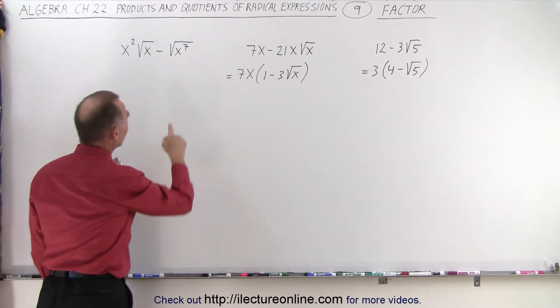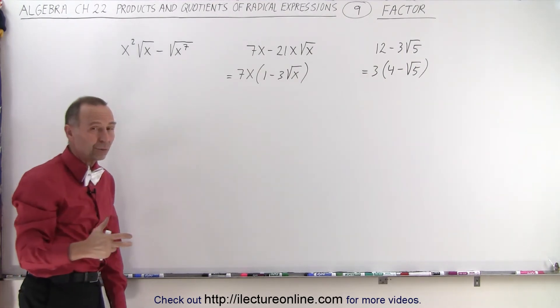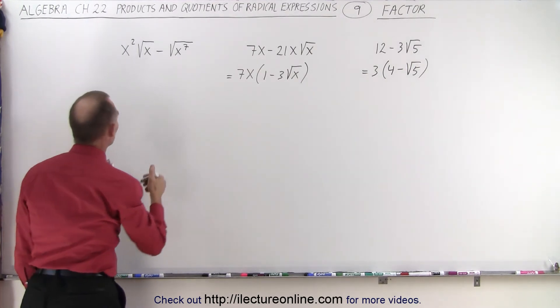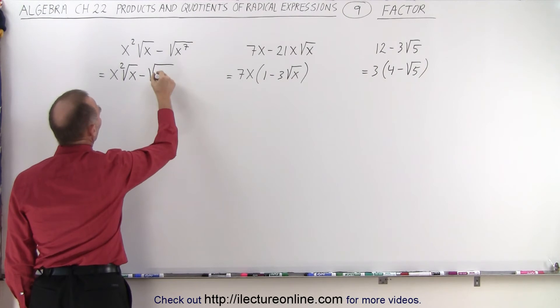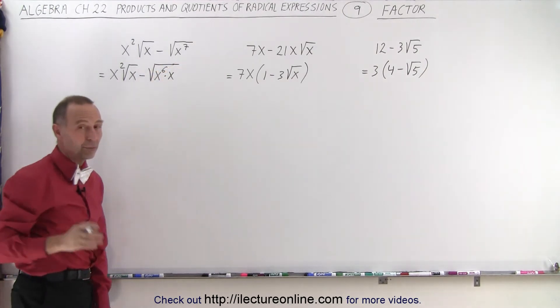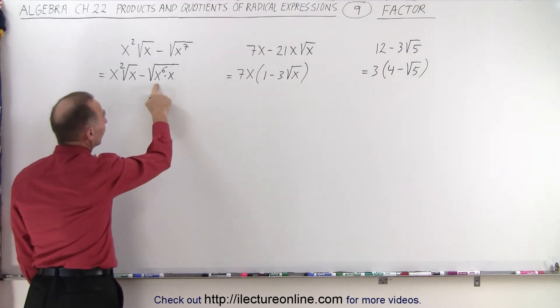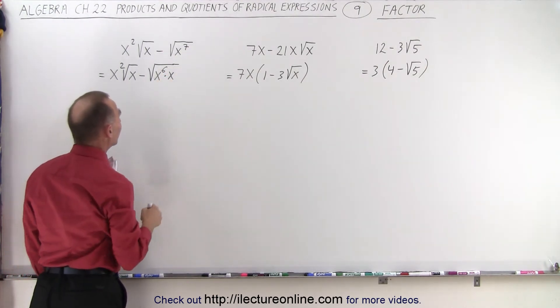Over here, we probably need to do something to this first before we realize what we can factor out. So notice that this can be written as x squared times the square root of x minus the square root of x to the sixth times x to the first. We don't have to write to the first. But notice when you multiply these out, you add exponents, you get 7 back. So we're good.